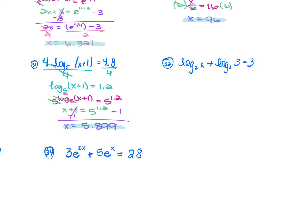For number 32: log₂(x) + log₂(3) = 3. Addition means multiplication: log₂(3x) = 3. Raise 2 to both sides: 2^(log₂(3x)) = 2³. The 2 and log₂ cancel: 3x = 8. Divide by 3: x = 8/3.